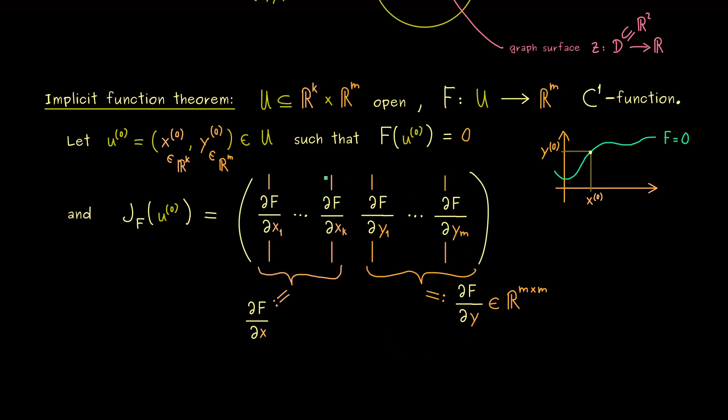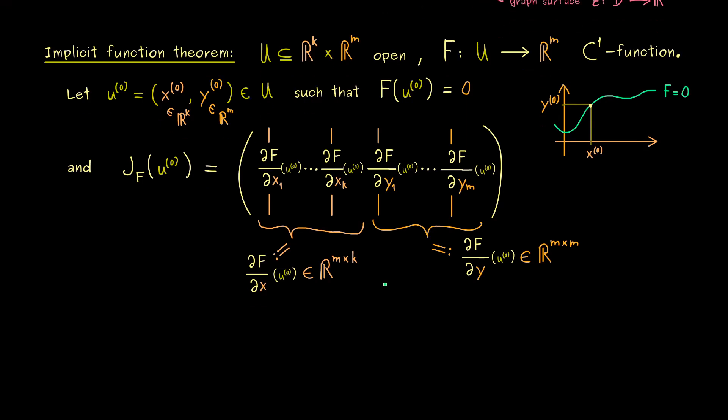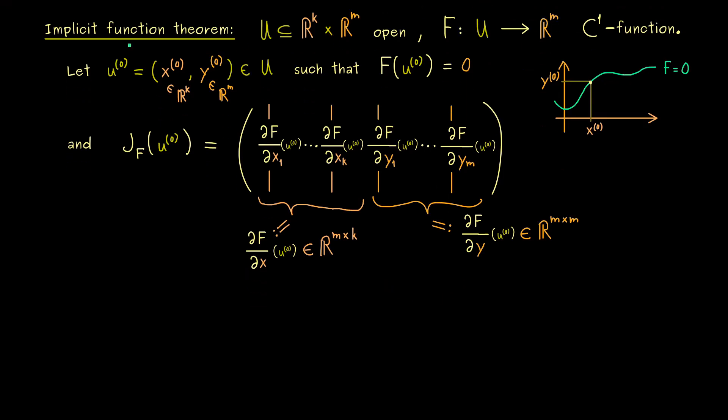Okay, so this is how the general Jacobian looks like, but we should be more precise, because we want to evaluate the partial derivatives at the point u^0. Which means we should definitely put this into our notation as well. And there we get our ∂F/∂x at u^0 is an m times k matrix. So in summary, we read our Jacobian here as a block matrix. And with that we have all the assumptions. Now we can formulate our implicit function theorem.